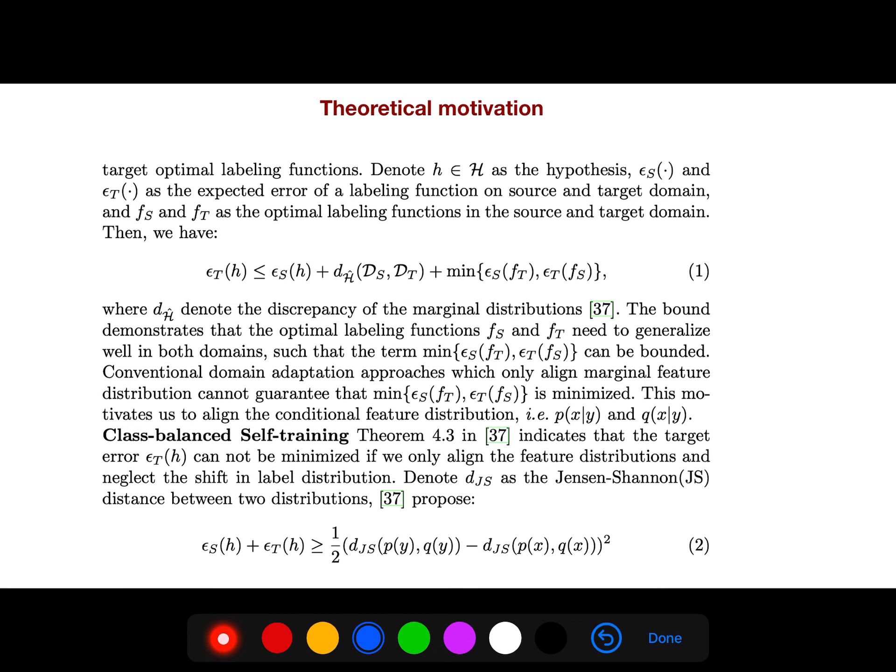From previous video, you saw that we have an upper bound on the target for our hypothesis. The bound demonstrates that the optimal labeling functions need to generalize well in both domains, such as this term, which can be bounded. But conventional domain adaptation approaches, which only align marginal feature distribution, cannot guarantee that minimum is minimized. So this is the Jensen-Shannon distance between the two distributions.